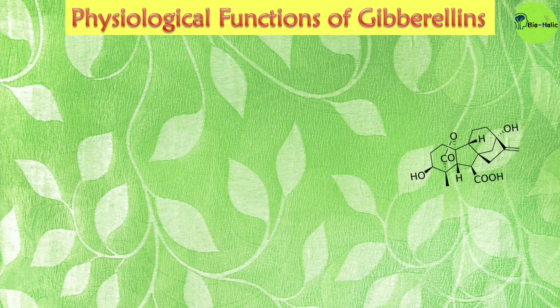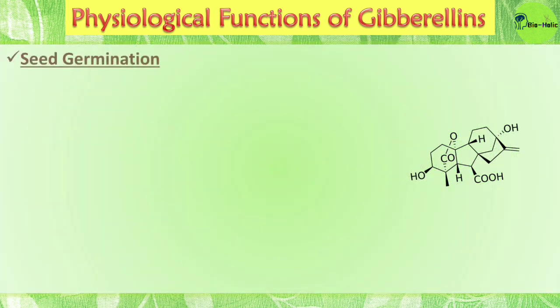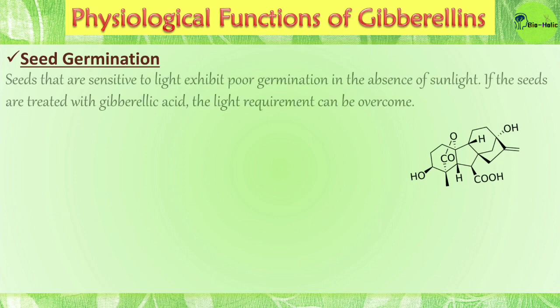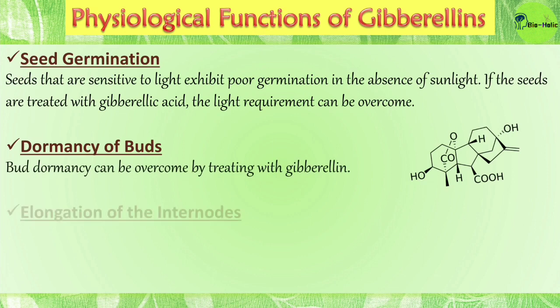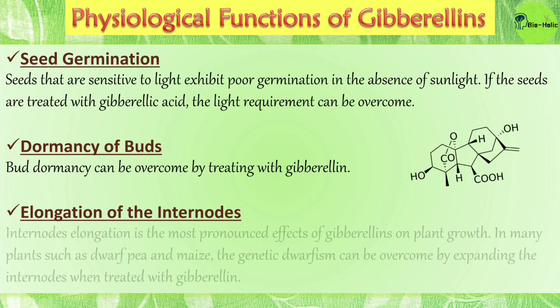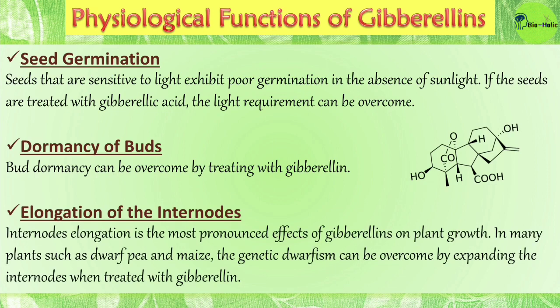Now, what are the physiological functions of gibberellins? Gibberellins are important for seed germination — seeds sensitive to light exhibit poor germination in the absence of sunlight, but if treated with gibberellic acid, the light requirement can be overcome. Bud dormancy can also be overcome by treating with gibberellin. Internode elongation is the most pronounced effect of gibberellins on plant growth; in dwarf pea and maize, genetic dwarfism can be overcome by expanding the internodes when treated with gibberellins.